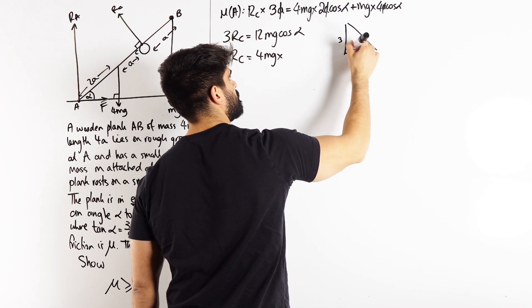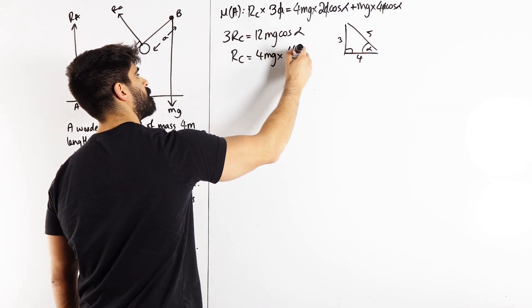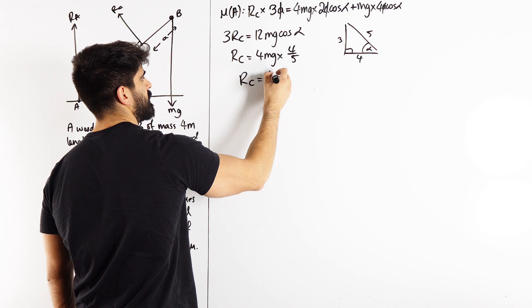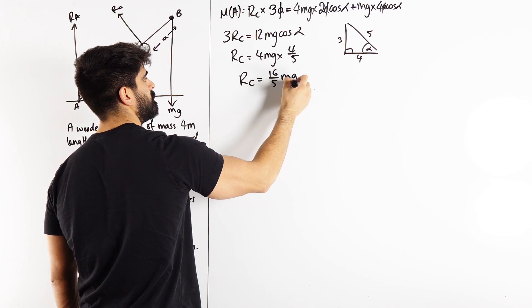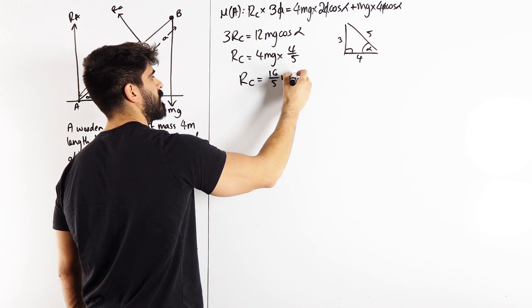So we can work that out from tan alpha being 3 over 4. Tan is opposite adjacent, so 5. So cos will be 4 fifths. So RC is 16 fifths MG. That's not an answer, that is just a part of our working.